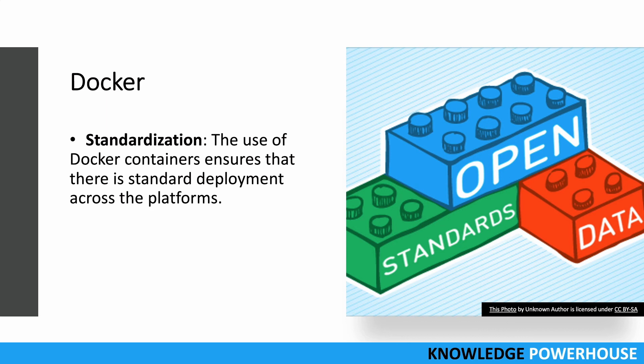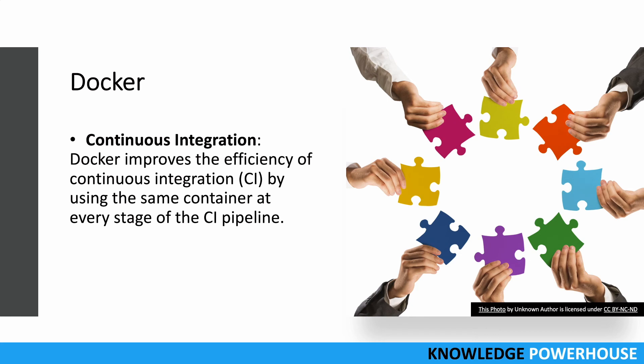Continuous integration efficiency is increased when using Docker containers. You can use the same container at every stage of the CI pipeline. From your local development machine you create a container, and that same container goes through unit testing, functional tests, end-to-end tests, performance tests, and finally to production. Using the CI pipeline, you keep transferring the same container throughout.